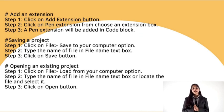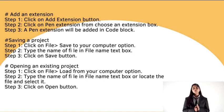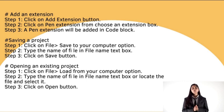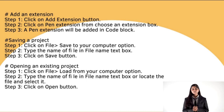To add an extension: step one, click on the Add Extension button; step two, click on Pen Extension from the Choose an Extension box; step three, the Pen Extension will be added in the code block. To save a project: step one, click on File, then on Save to your Computer; step two, type the name of the file in the text box; step three, click the Save button. To open an existing project: click on File, then Load from your Computer, name and select the file, then click Open.